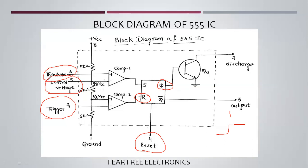The sixth pin is the Threshold. Threshold is the non-inverting input of comparator 1. Comparator 1 compares the threshold voltage and produces a high or low output. If comparator 1 output is high, it sets the flip-flop, making Q equal to 1 and Q-bar equal to 0. This creates the oscillation — high and low — present at the output.